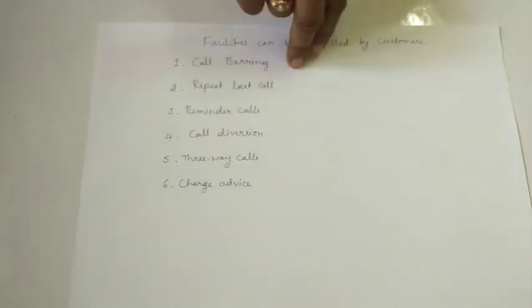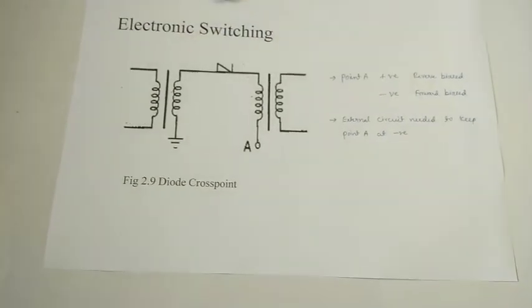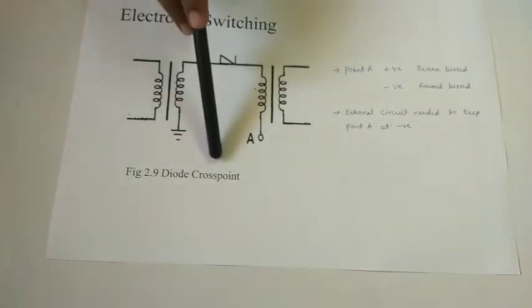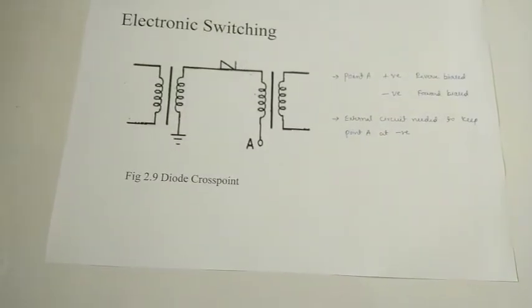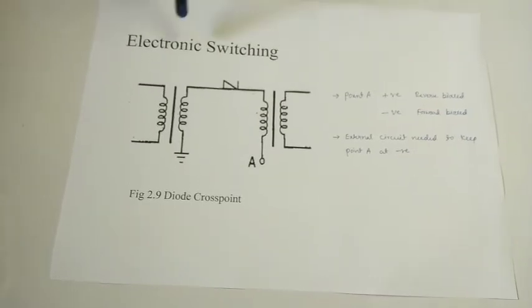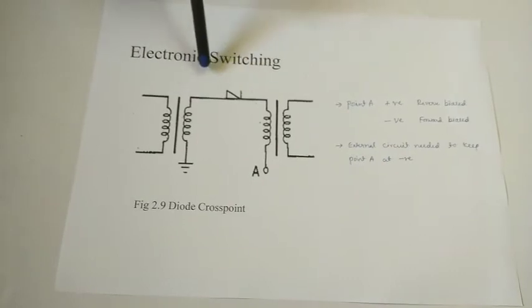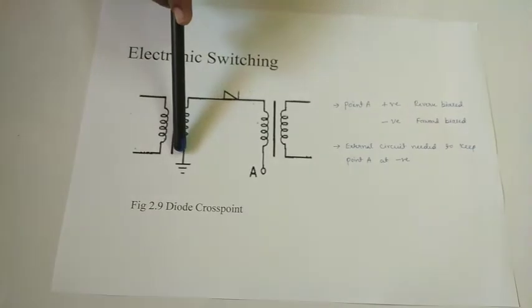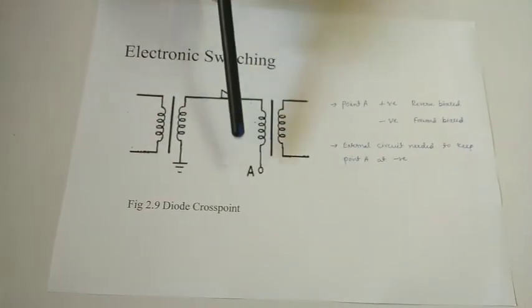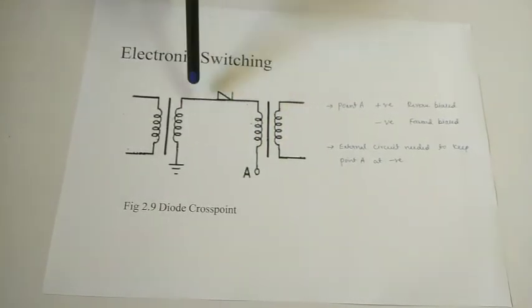We are moving from an electromechanical system to an electronic system, as shown in the diagram. This is referred to as the diode cross point. In the earlier crossbar system, each cross point was operated by a magnet. Those magnets are replaced by the diode cross point. It is not actually a diode — it is constructed using a transformer with one point grounded and another point connected to A. Depending on the position of A, the communication line will be connected or disconnected.